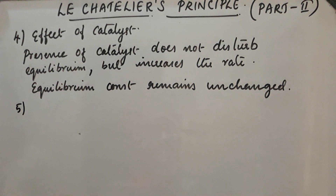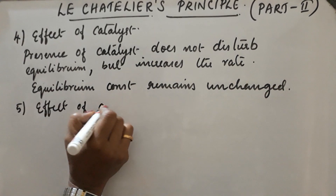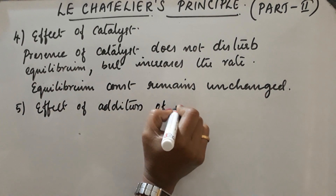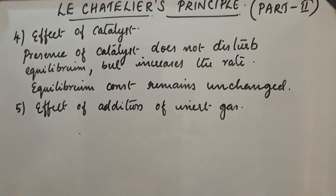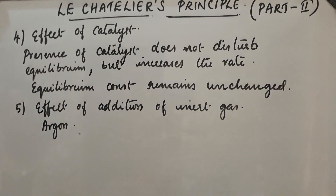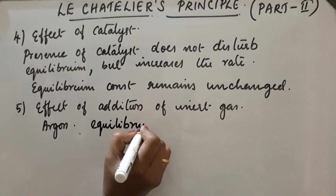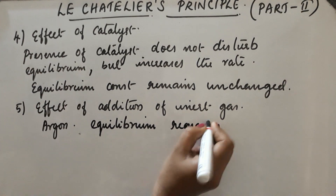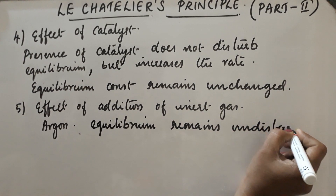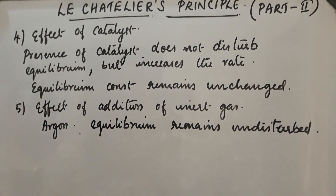Fifth point — effect of addition of inert gas. If an inert gas like argon is added to a reaction mixture at constant volume, equilibrium remains undisturbed. Because the addition of an inert gas at constant volume does not change the molar concentration or partial pressure of the substances involved in the reaction.